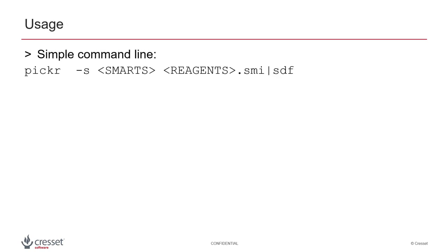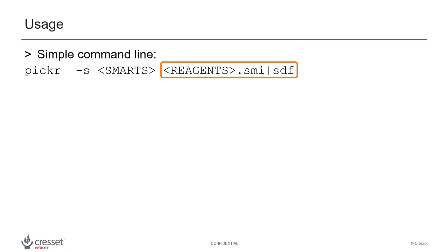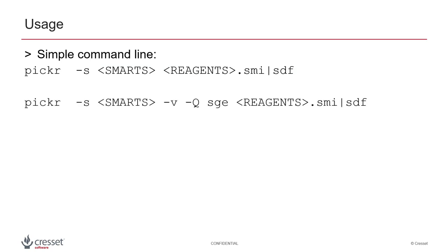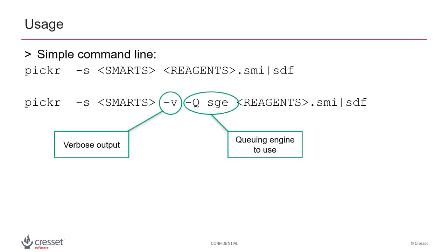Pickr commands are straightforward. After the Pickr instruction, use a SMARTS string to define the scissile bond to be used for reagent alignment, then the reagents in SDF or SMILES format. Further options such as verbose output and use of a queuing engine can be specified. Pickr will automatically divide the calculation into suitable jobs and submit them to your chosen queuing system.